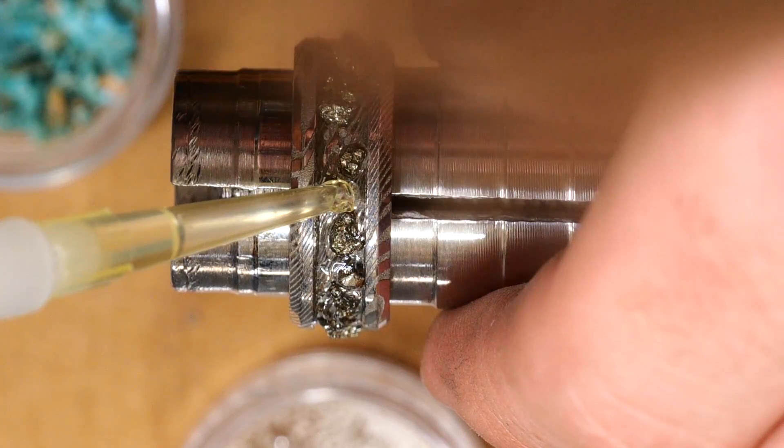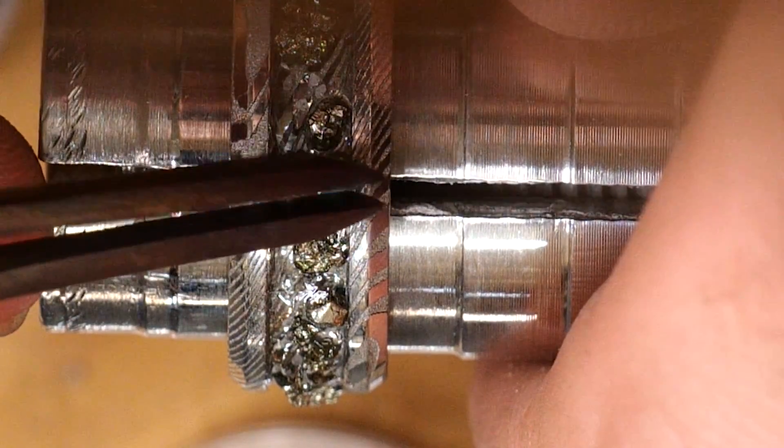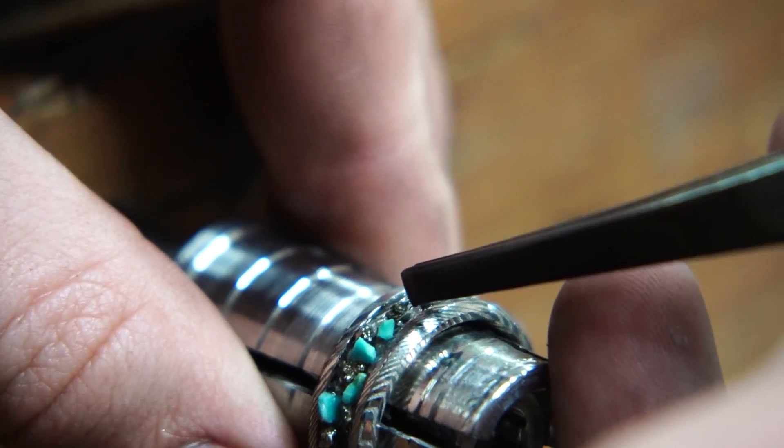Now it's time to add the turquoise, and my strategy here is again very straightforward. I'm essentially just filling in any of the missing spots with turquoise. Anywhere there's space, I'm putting a piece of turquoise in there.